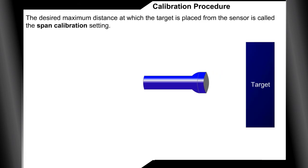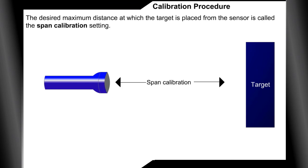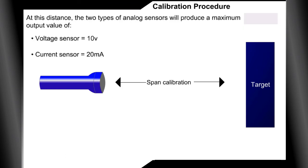The desired maximum distance at which the target is placed from the sensor is called the span calibration setting. At this distance, the voltage sensor will produce a maximum output value of 10 volts, and the current sensor will produce a maximum output value of 20 milliamps.